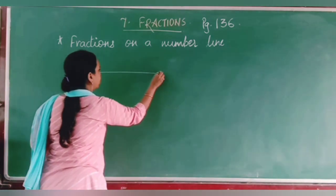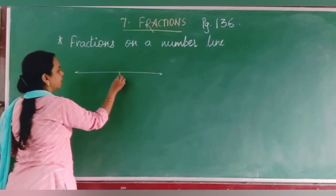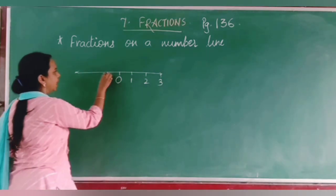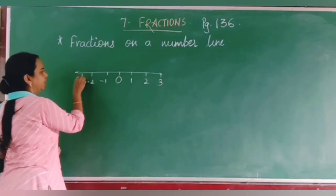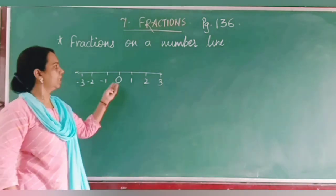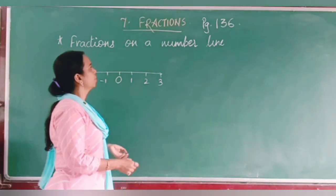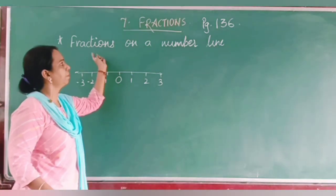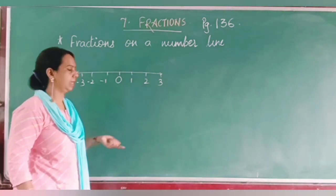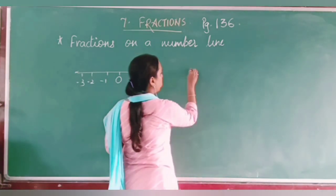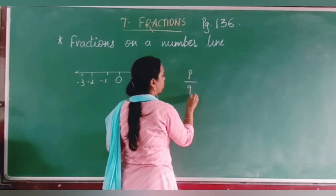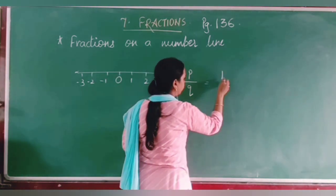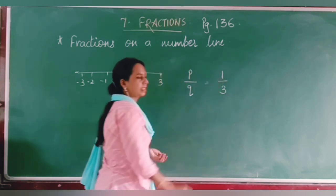In the number line, you already know that 0 lies in the middle — on the right side are all the positive numbers and on the left side are all the negative integers. So now we are going to work with only positive numbers first. A fraction is written in P by Q form — that is, any number with a numerator and a denominator.